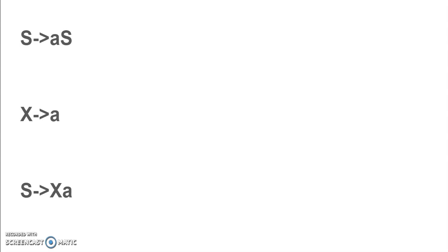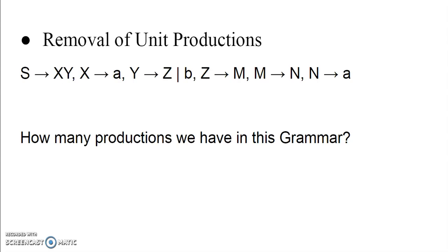Here are three examples. Pause the video and write down your answer: whether these are unit productions. They are not unit productions. S produces aX — you have a terminal and a variable, so it is not unit production. X produces a — there is no variable at all at the right-hand side. S produces XA — again there is a terminal with the variable. Unit production means a single variable at the right-hand side, so these are not unit productions.